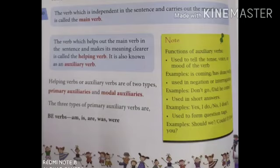Note for students: Functions of auxiliary verbs — used to tell the tense, voice, or mood of the verb. Examples: is coming, has done, will go. Use in negation or interrogation. Examples: don't go, did he come. Use in short answers. Example: yes I do, no I don't. Use to form question tags.